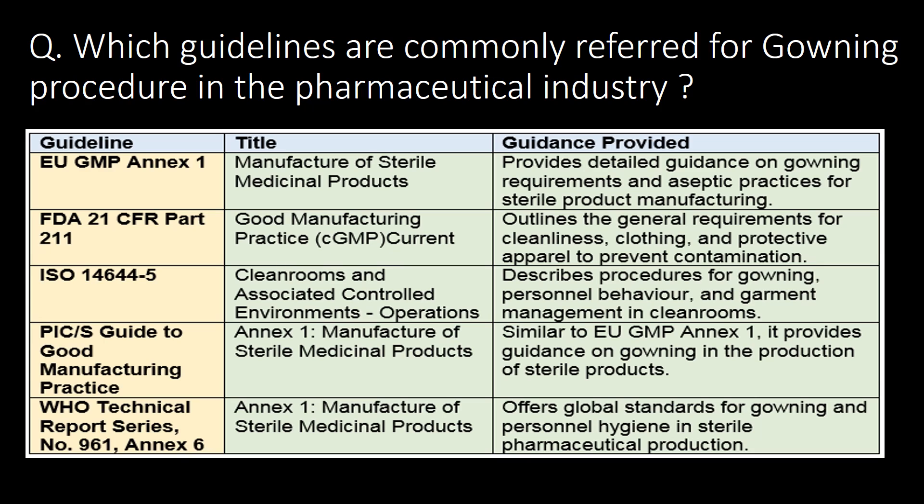Last and very important question: which guidelines are commonly referred to for gowning procedures in the pharmaceutical industry? EU GMP Annex 1, FDA 21 CFR Part 211, ISO 14644-5, PIC/S Guide to Good Manufacturing Practice, and WHO's Technical Report Series No. 961 Annex 6 are the commonly referred guidelines for gowning procedures in the pharmaceutical industry.